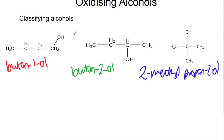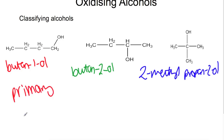We're looking at classifying these alcohols. So we've got three classifications: primary, secondary, and tertiary. What we need to look at is the carbon attached to the OH group, and you're looking for how many carbons it is attached to. In this case here we've got our OH group attached to the end carbon, which means it's only attached to one other carbon and this makes it a primary alcohol. You'll often see this represented with the degree sign.